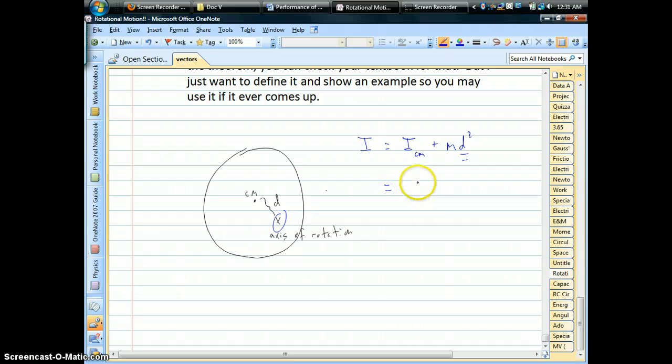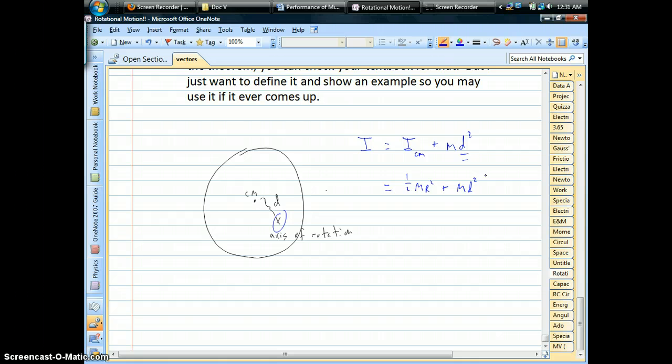It would simply be the inertia at the center of mass, which is one-half mr squared. That's the normal inertia for a disc. But then we're going to take the mass of the disc and multiply it by that d squared, wherever that distance happens to be. That's it. That's the trick. That would be the new inertia.